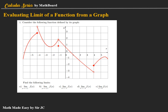For letter A, the limit of f of x as x approaches negative one from the left. So this is our negative one. Coming from the left, going to negative one, what value of the function is being approached? From the left going to negative one, the value being approached by the function is two. Therefore, the answer in letter A is two.